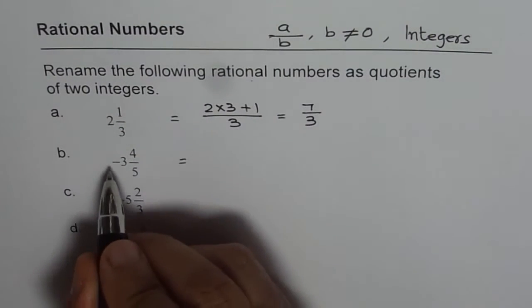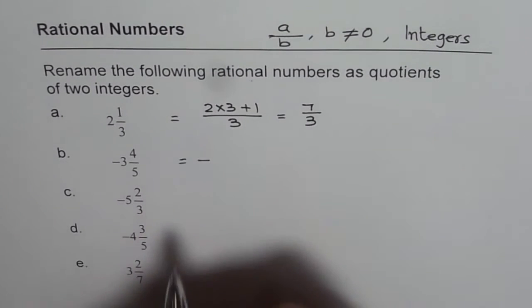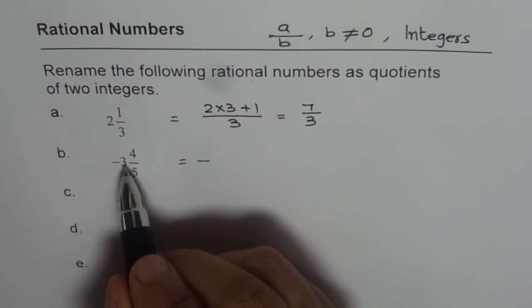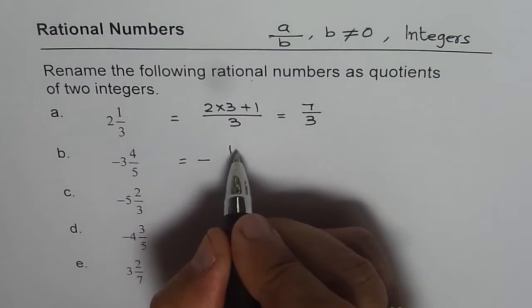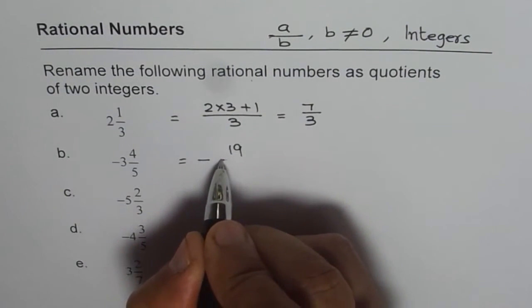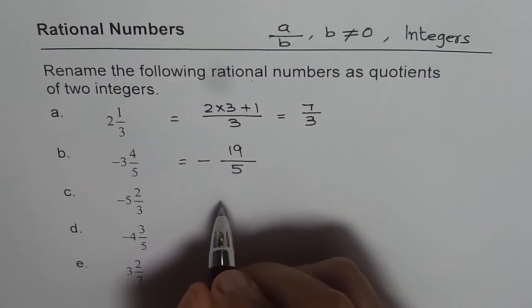The next one is -3 4/5. Now keep the minus sign separate. You can do 3 times 5 as 15 plus 4 as 19. So I am writing 19 with the same denominator as 5.